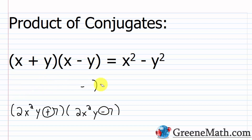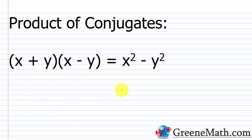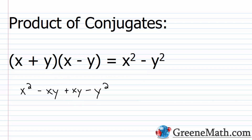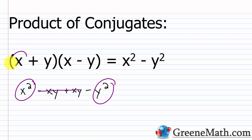When we have the product of conjugates, it follows a very simple pattern. If I foil out x plus y multiplied by x minus y: x times x is x², the outer term gives minus xy, the inner gives plus xy, and the last gives minus y². The middle two terms cancel, leaving x² minus y². So just think: first guy squared minus second guy squared.